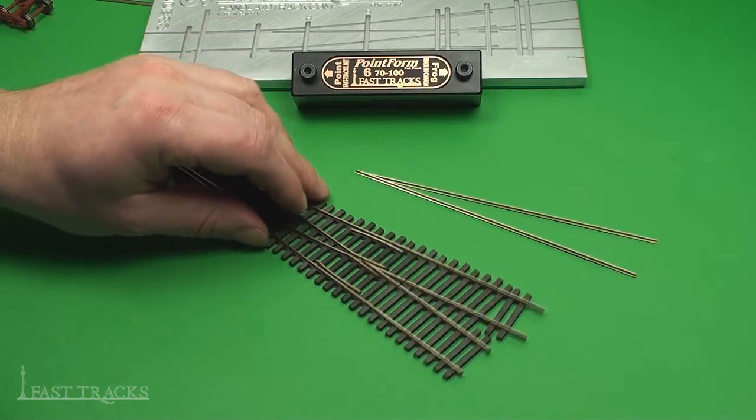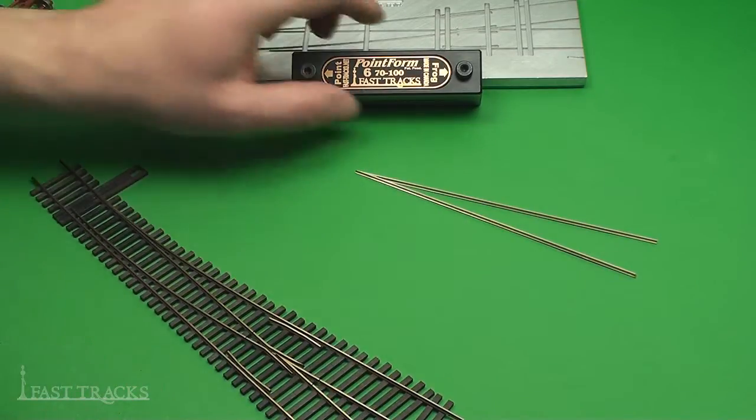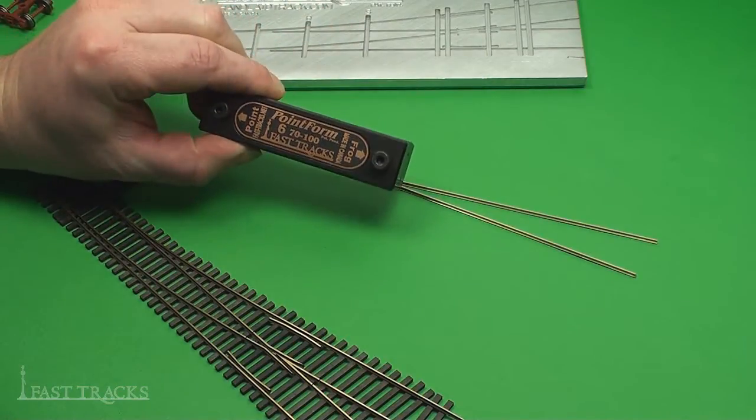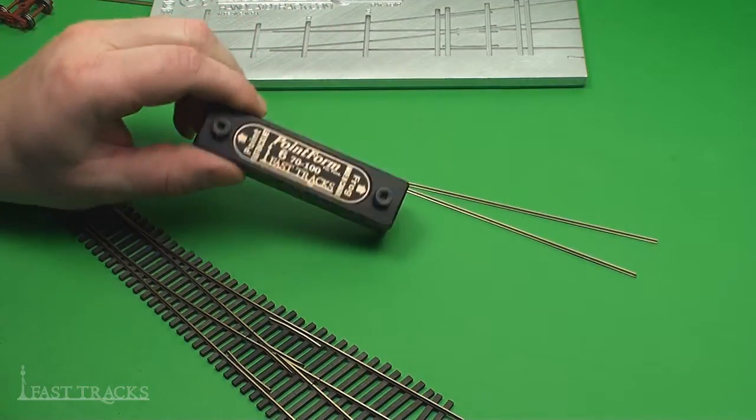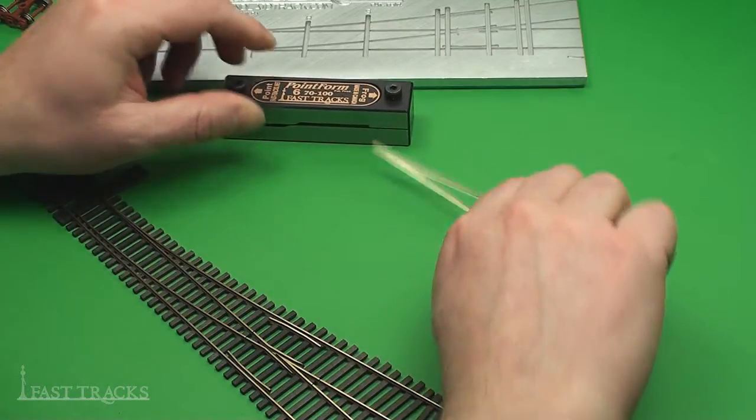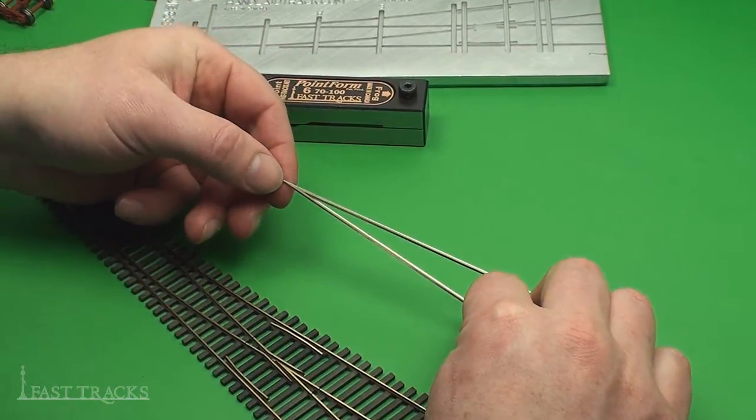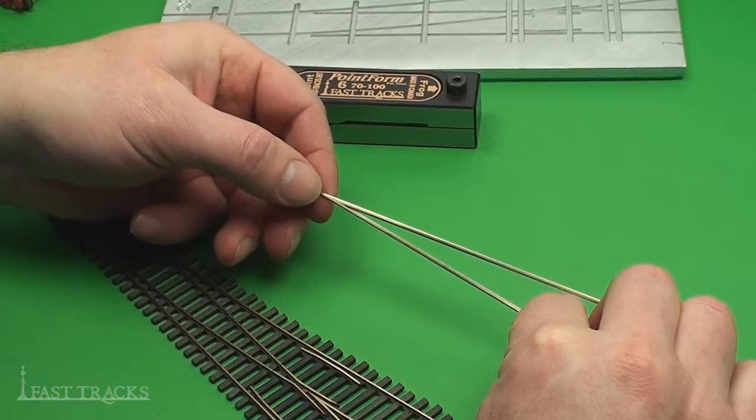We've made a tool to make that job a lot easier. We call it our point form tool. I'm going to go through the process of using this tool now and show you how to produce a really nice set of frog points like this. It's nice and sharp and very precise.